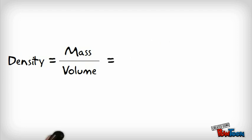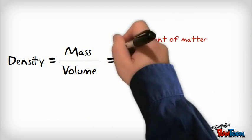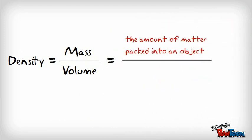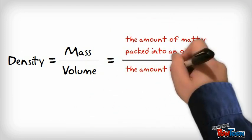Mass is the amount of matter or stuff that's packed into an object. Volume is the amount of space an object takes up.